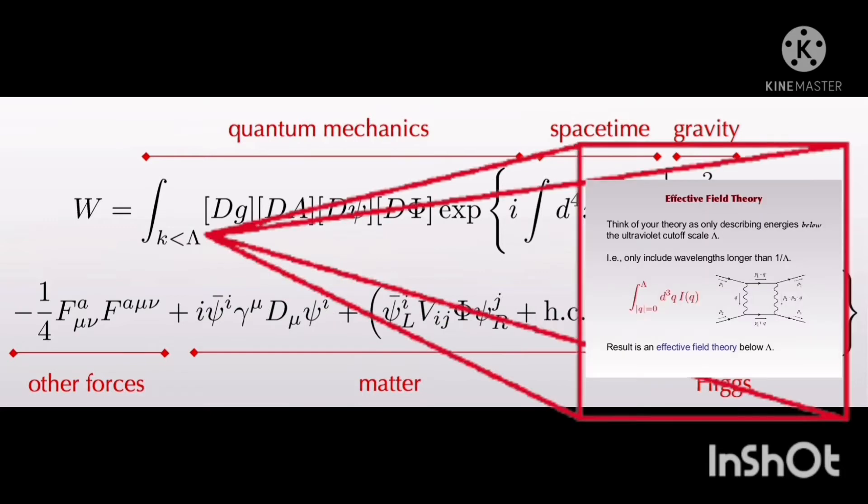Lambda is the ultraviolet cutoff. This is basically an arbitrary minimum cutoff of energy, momentum, and length.